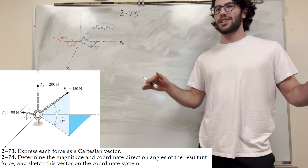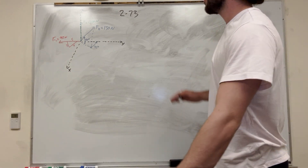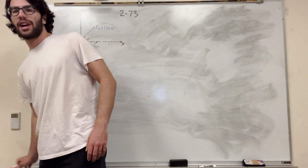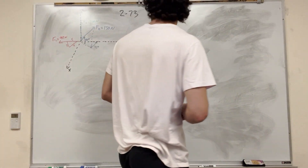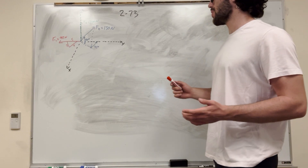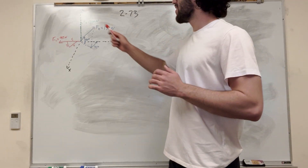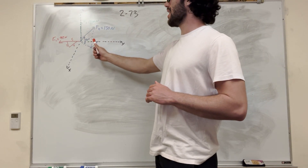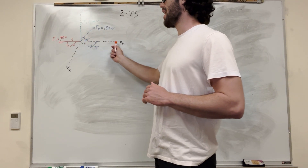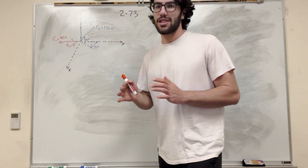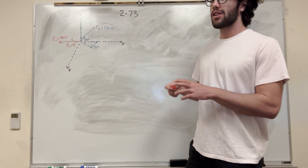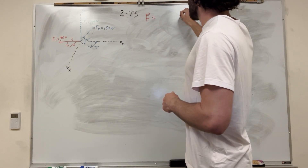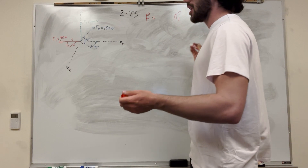Let's get started with that first. After that we can find the magnitude and everything, but just breaking it up is going to be the hard part. So let's start with force 1. Force 1 is acting in the x-z plane — basically it is acting perpendicular to the y-axis, which means there is no force being acted on the y-axis. So we already know that for force 1, when we break it up, the j component is going to be zero.